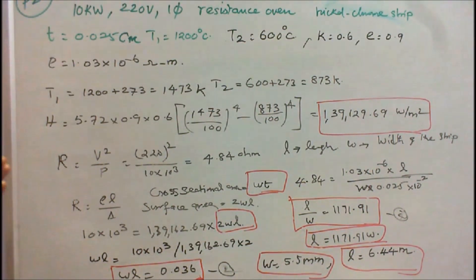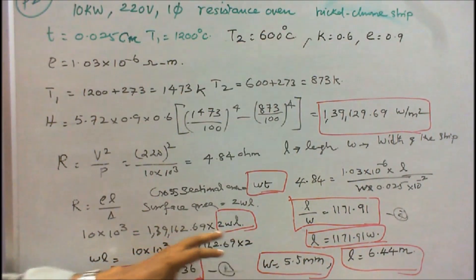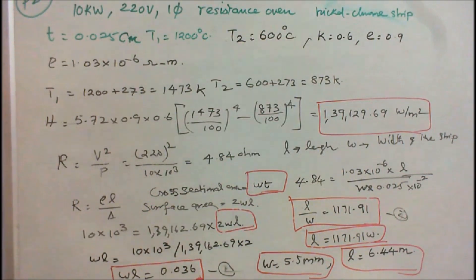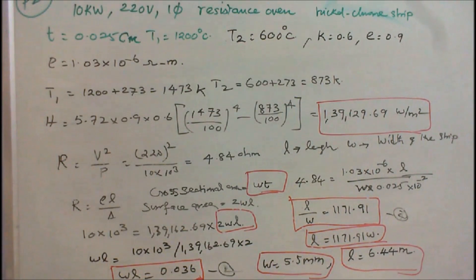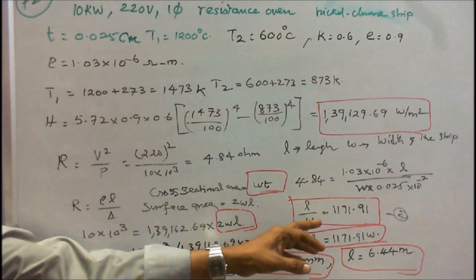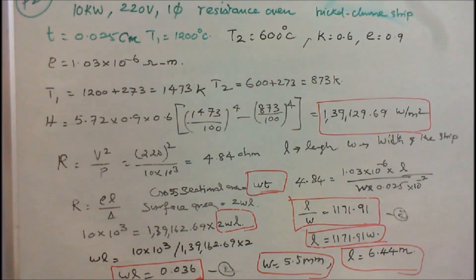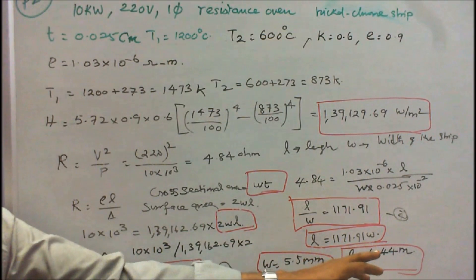Under thermal equilibrium condition, input power equals H times surface area. For a rectangular strip, surface area equals 2 × W × L. Substituting all values gives W × L equals 0.036. This is equation 2. Solving equations 1 and 2 simultaneously gives length L equals 6.44 meters and width of the strip equals 5.5 mm.